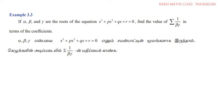Alpha, beta, gamma are the roots of x³ plus px² plus qx plus r equal to 0. We have a 3-root equation, so we can apply the three relations from Vieta's formulas.